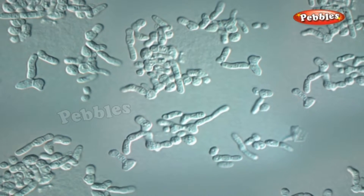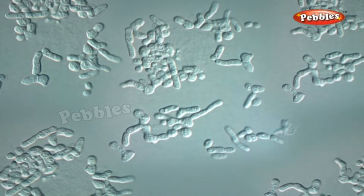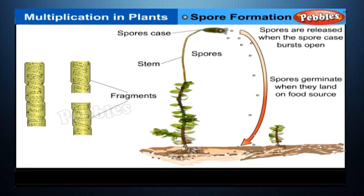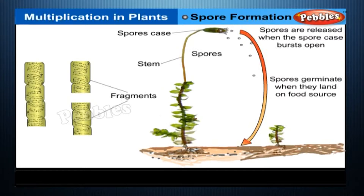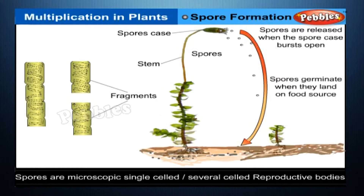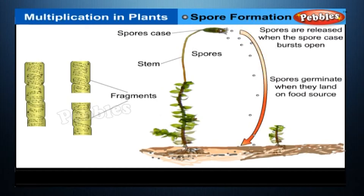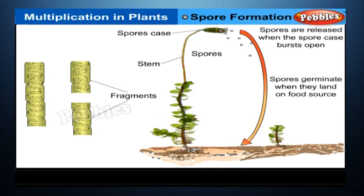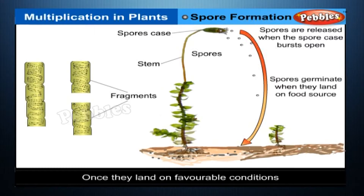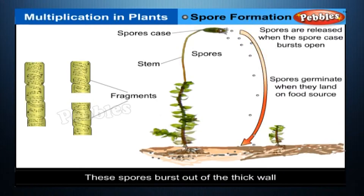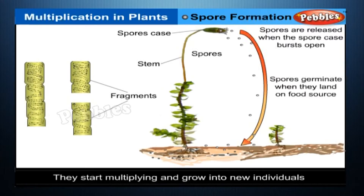If this process continues, a large number of yeast cells are produced in a short time. Spore formation: some lower plants such as ferns, mosses and lichens multiply asexually through spores. Spores are microscopic, single-celled or several-celled reproductive bodies that are mostly spherical in shape and are protected by a thick wall when conditions are unfavorable, like humidity and temperature. Once they land on favorable conditions, these spores burst out of the thick wall, start multiplying and grow into new individuals.